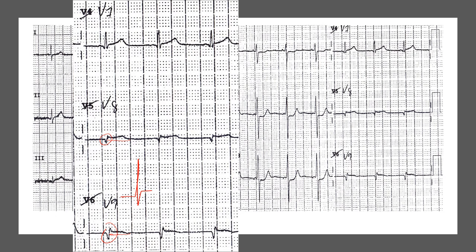We discussed it for a while, and then the patient's troponin came back at a level well above our cutoff of 40. The cardiologist then decided to take the patient to the cath lab, and he was stented in the same sitting.